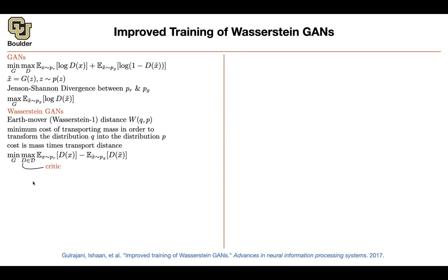But there's a catch: D must be from the space of 1-Lipschitz continuous functions. One is the Lipschitz continuity constant. In the original paper, this is a big problem because in neural networks it's a little bit hard to enforce Lipschitz continuity. One naive method is to clip the weights of the critic to be inside a box, but then it's not going to be 1-Lipschitz — it's going to be K-Lipschitz. The idea here is to use gradient penalty instead.